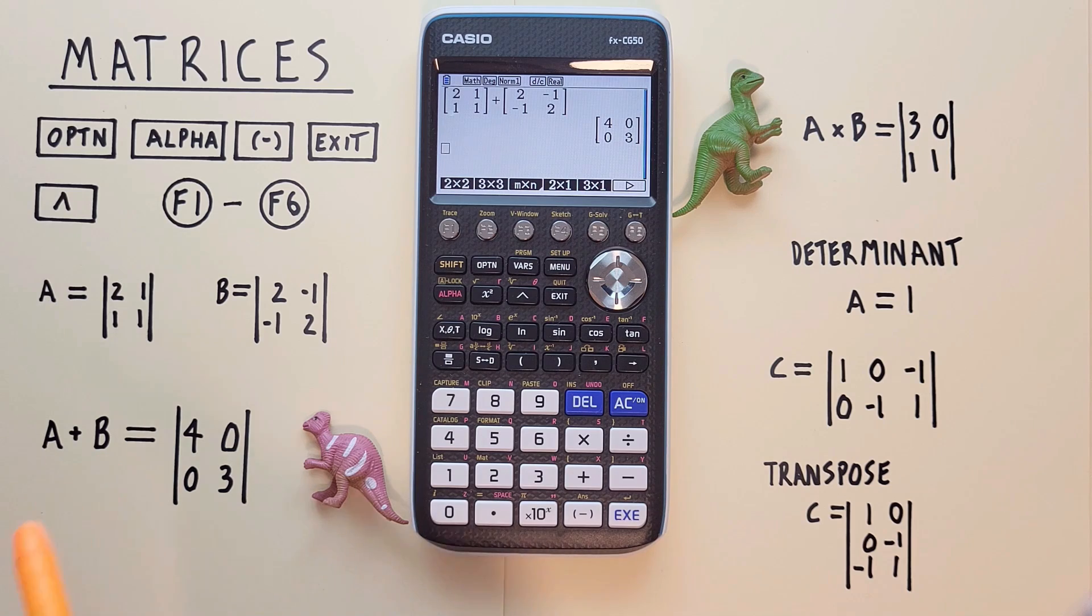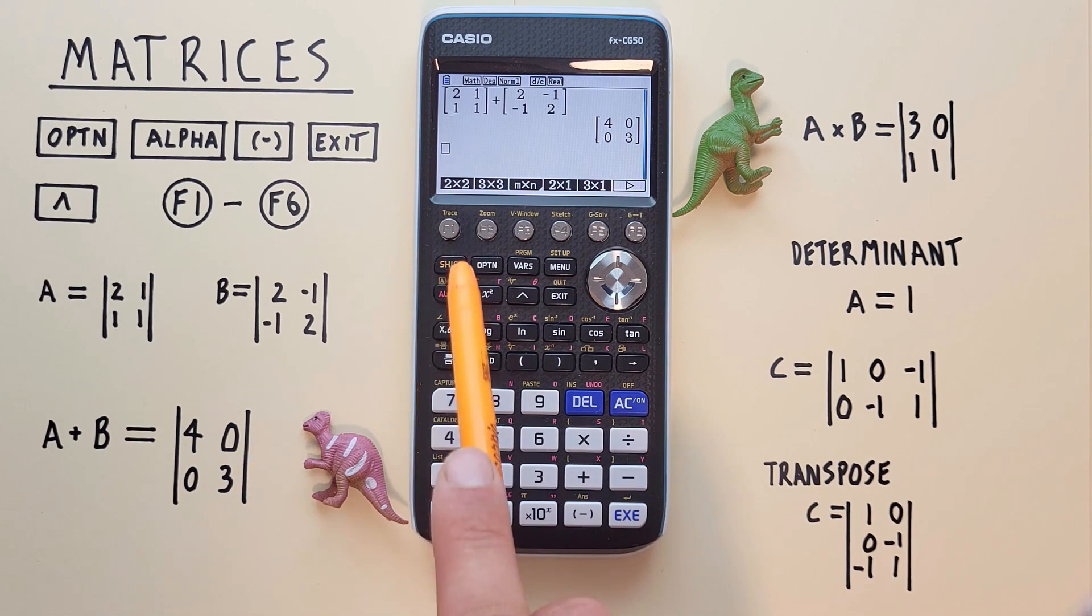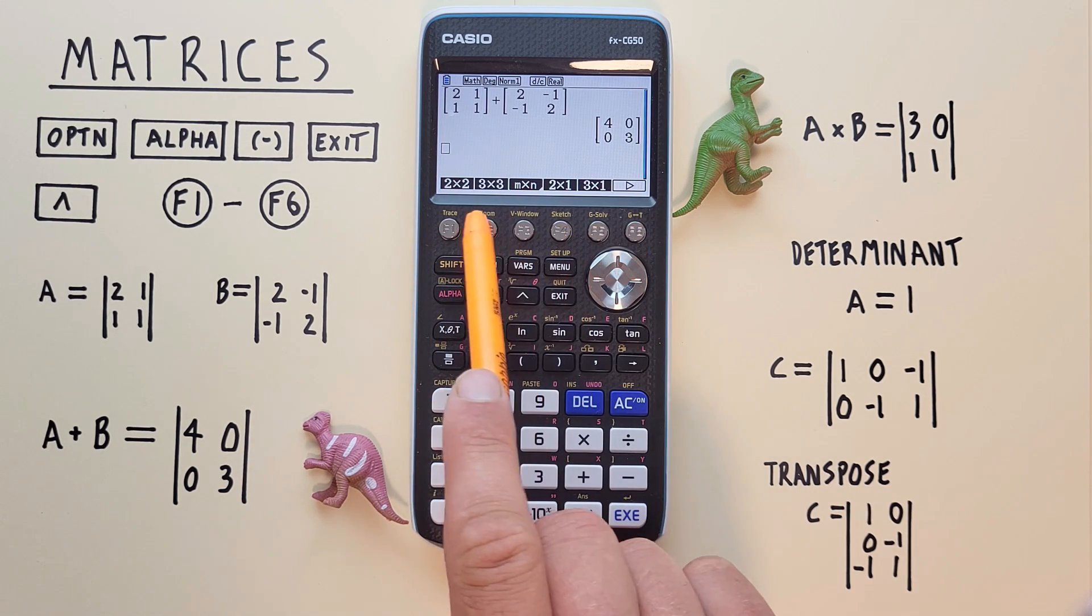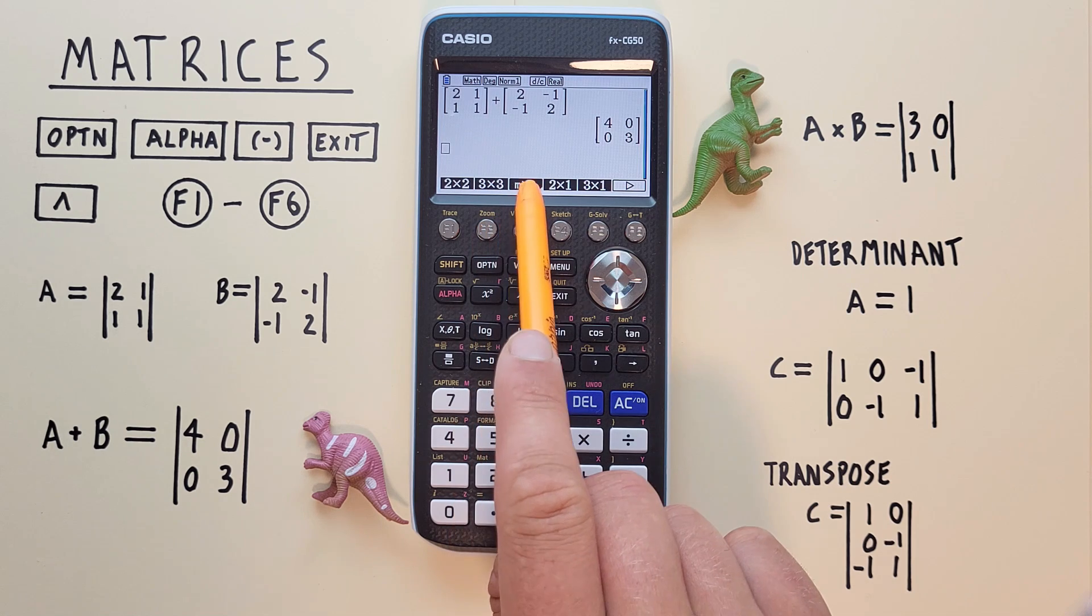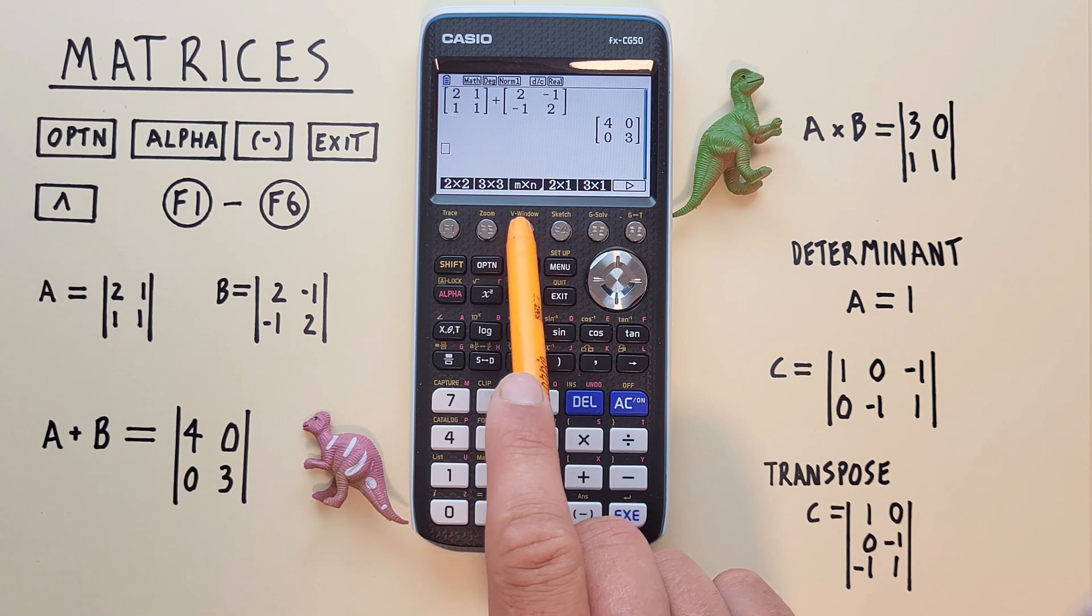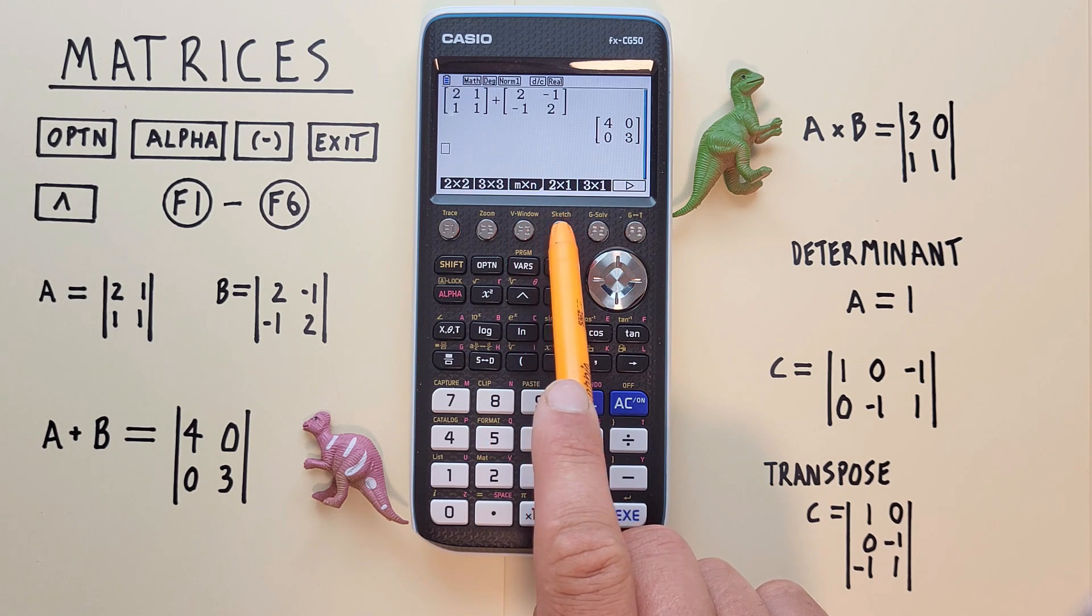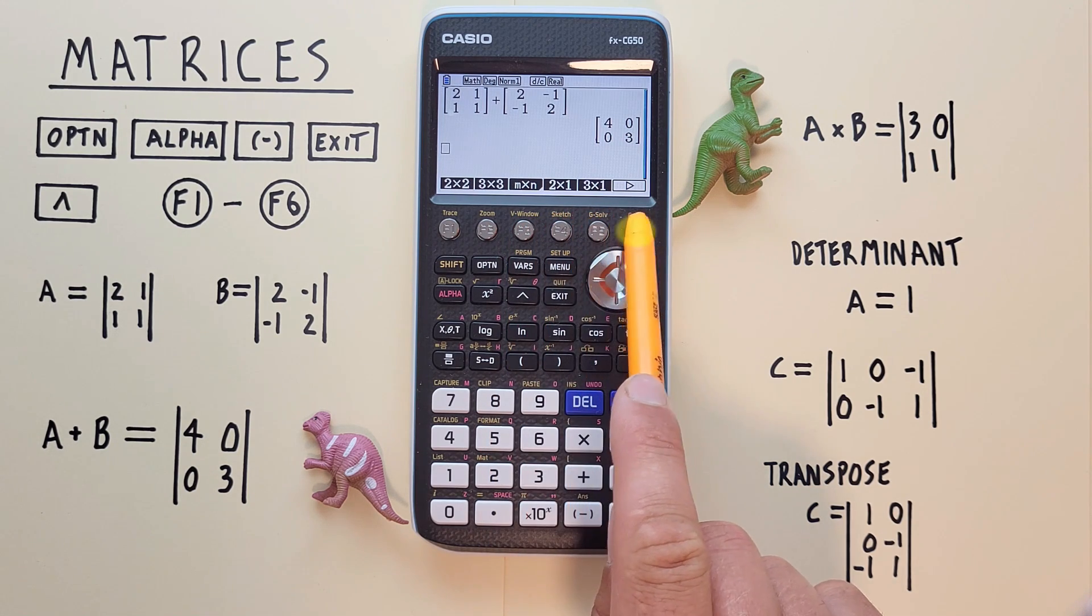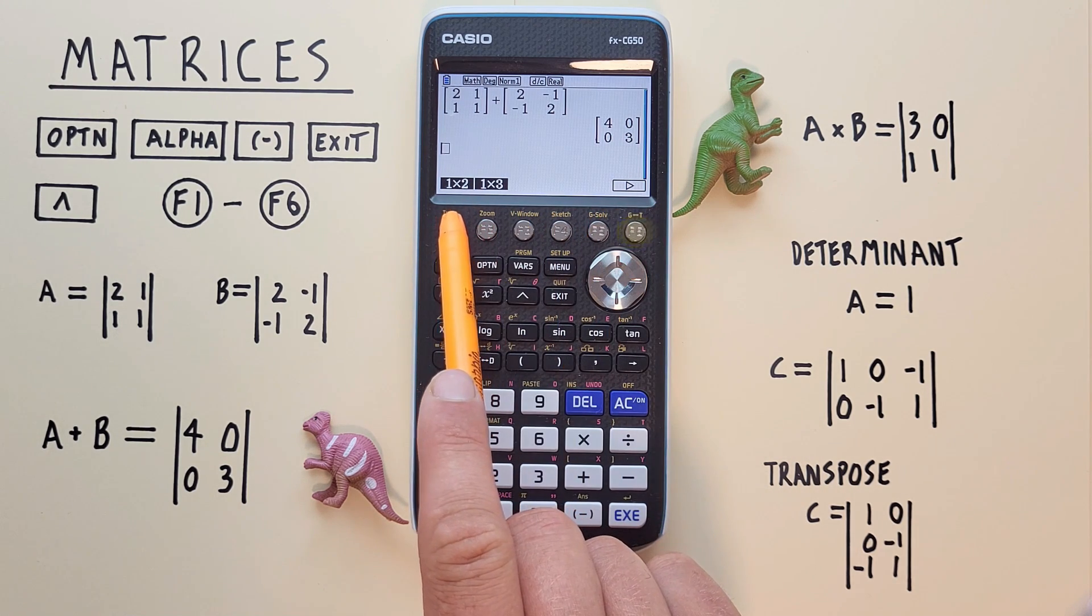If we want to enter a different size matrix we can choose from along the bottom here. We see we have 3×3 or M times N which allows us to choose the number of columns and rows, as well as 2×1, 3×1, 1×2 and 1×3.